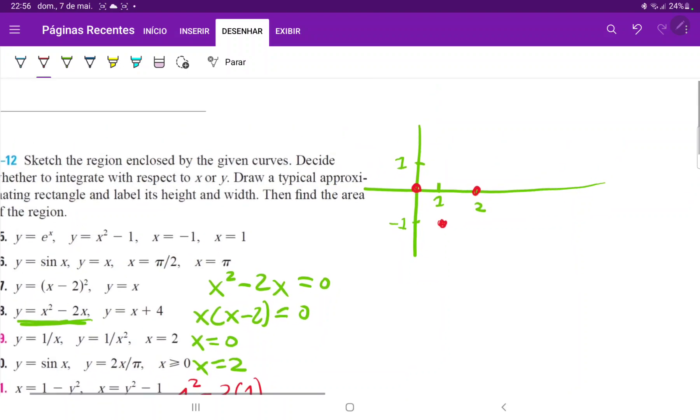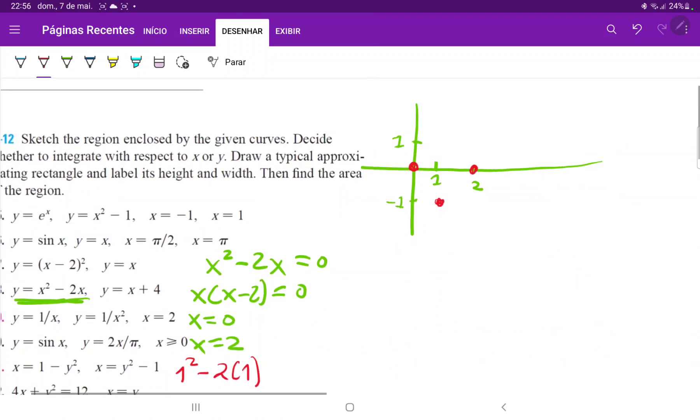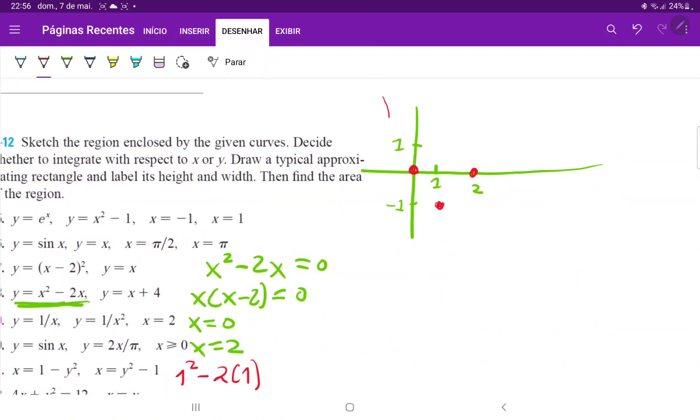So we'll draw this out. It looks something like this. And this is our curve, y is equal to x squared minus 2x.